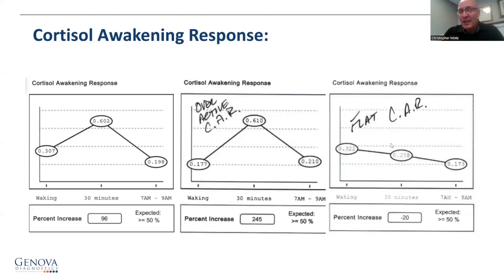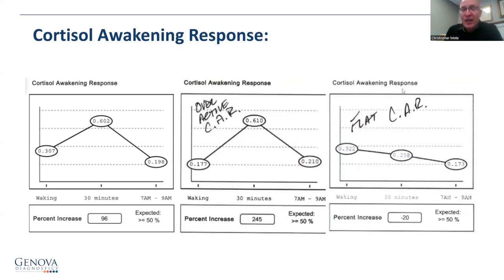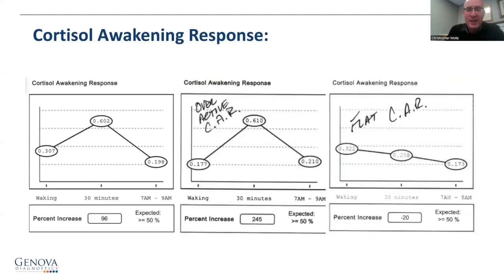If you're measuring these, you can start working with a patient to support their stress response and check it four months later — they'll actually be back over here. Many times, if not most times, the progression towards health goes from flat back to the chronic threat response. And then it becomes very apparent that the patient needs to work on their limbic system.